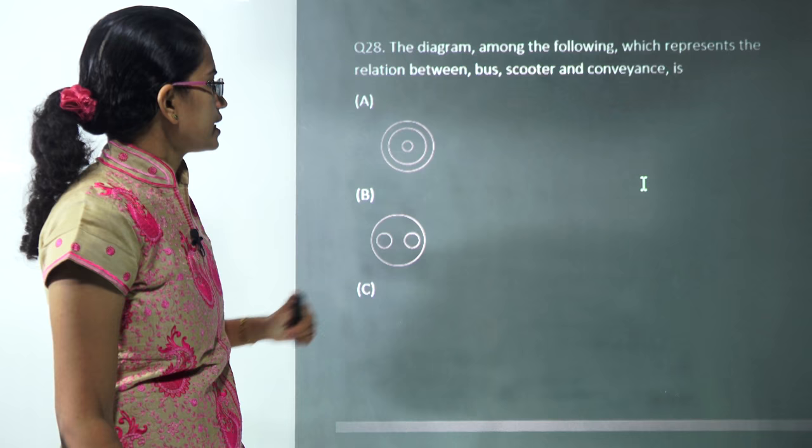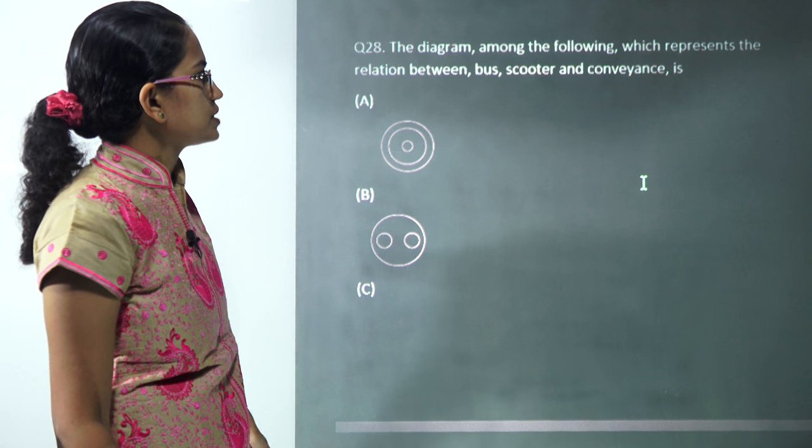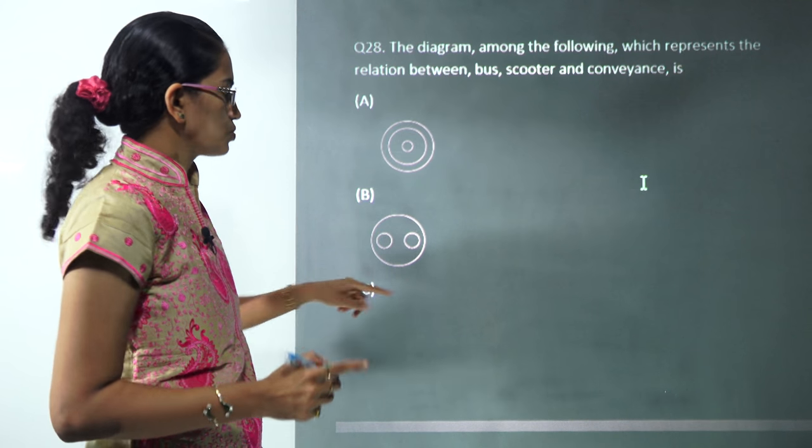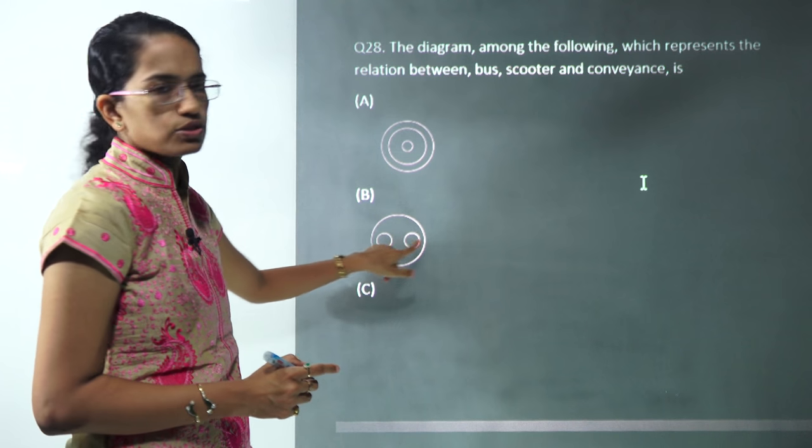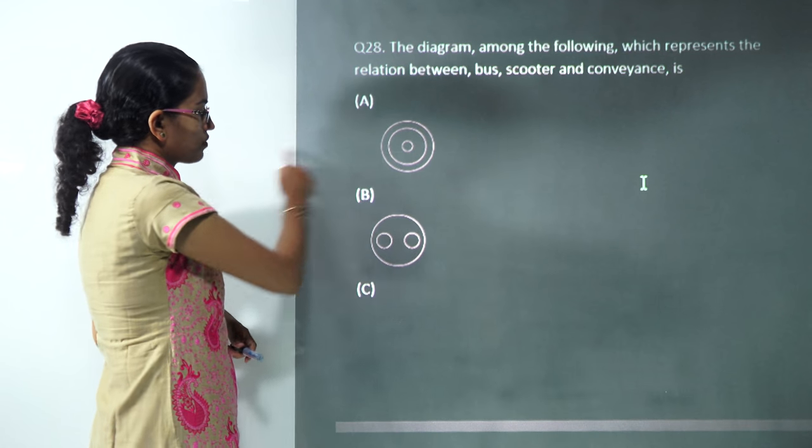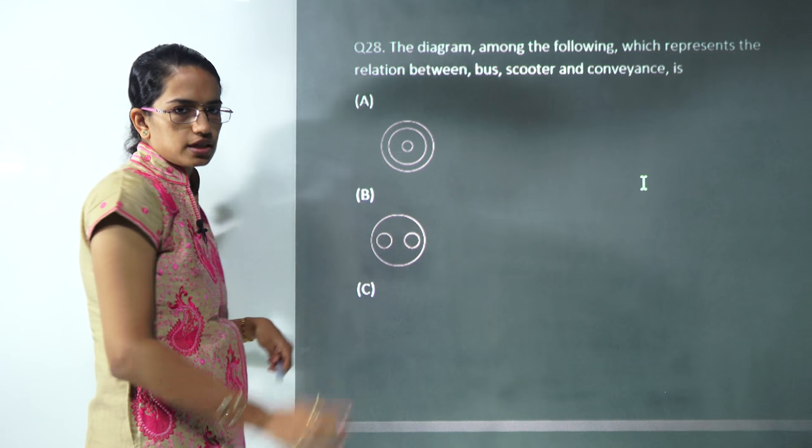Next, you have various diagrams drawn to show a relation between conveyance, bus, and scooter. Within the conveyance you can have bus or a scooter, so B would be the correct answer. Within the big circle of conveyance you can have two small circles of bus and scooter.